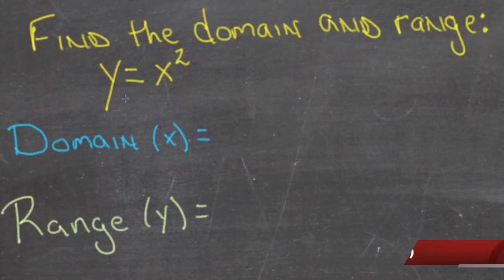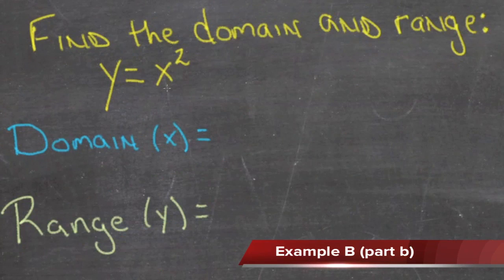To define the domain and range of the function y equals x squared, we're just going to take a look at what could go into the function and what could come out of the function. The domain, x, is the numbers that could go into the function.